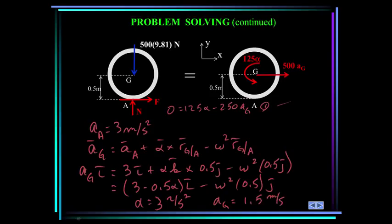The acceleration of G came out positive, so it's toward the right. Alpha came out positive, so it's counterclockwise. Omega equals zero, which makes sense — this problem occurs just when the truck starts to accelerate from rest, so the initial angular velocity of the culvert is zero.